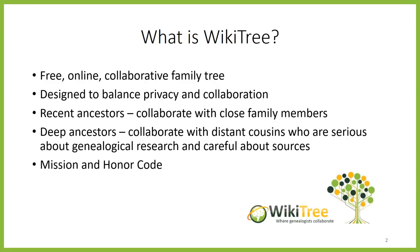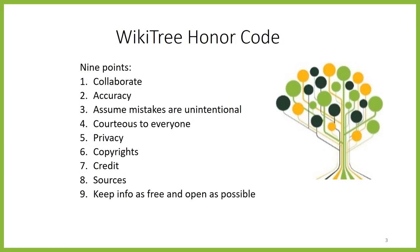WikiTree is free to use. Anyone can access the information on the tree. Those who actively help grow the tree must agree to the mission and the honor code. The WikiTree honor code is a pledge the community members make to each other. This is not like those user license agreements that we all just click 'I agree' to without reading. This really does govern how we all work together on WikiTree.